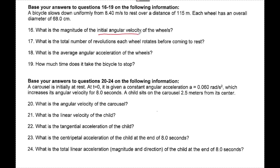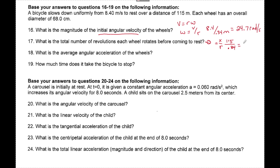Number 16: initial angular velocity. V equals r omega, so omega equals V over r. Initial speed was 8.4 m/s, diameter was 0.6 so radius is 0.34 meters — wait, 0.3 — giving initial omega of 24.7 rads per second. Total revolutions before rest: theta equals x over r, so 115 meters divided by 0.34 equals 338 radians. Converting: 338 radians times one rev over 2 pi gives 53.8 revolutions.